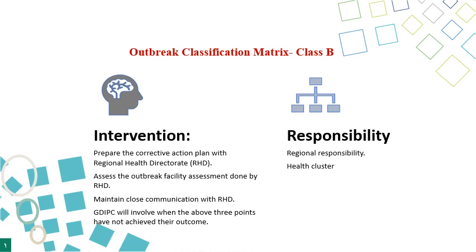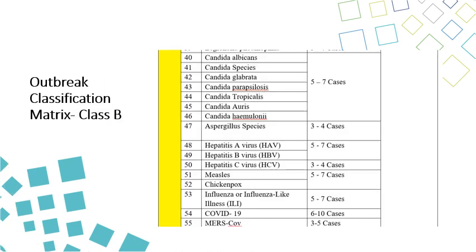For the outbreak classification matrix Level B, the responsibility lies with the regional health directorate and health cluster. For the intervention, the regional health directorate must prepare the corrective action plan, assist the outbreak facility assessment, and maintain close communication with the clusters and facilities. The general health directorate will be involved when these three points have not achieved their outcomes. When the number of disease cases is existing and increasing to reach this level, the general health directorate, health cluster, and regional health directorate should all be involved.